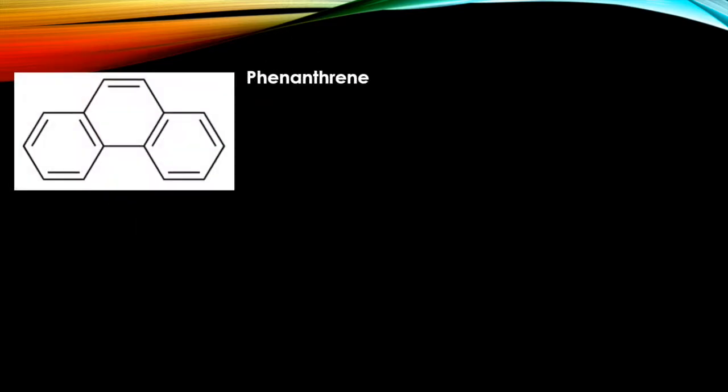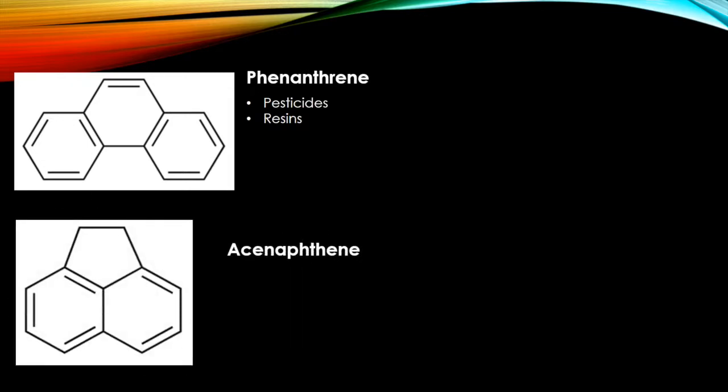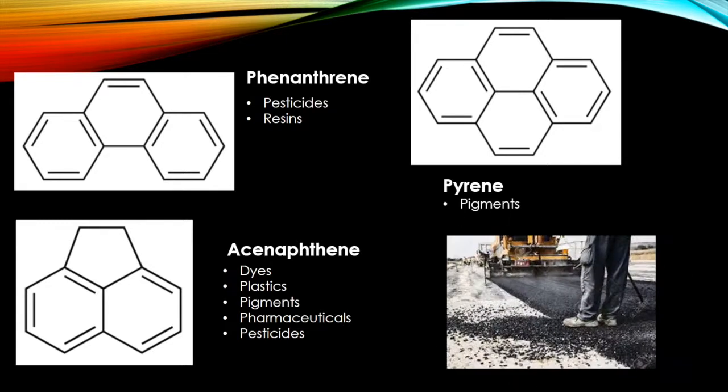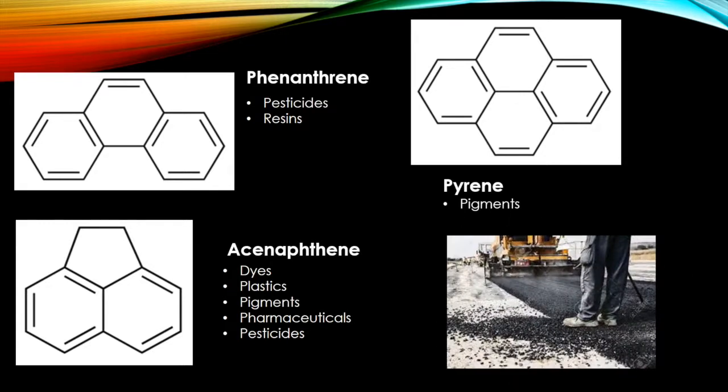Some examples of these PAHs include phenanthrene, which is used in the manufacture of pesticides and resins. Acenaphthene, which is used in the manufacture of dyes, plastic, pigments, pharmaceuticals, and pesticides. Pyrene is used in the manufacture of pigments. Other PAHs may be contained in asphalt, which is used for the construction of roads.